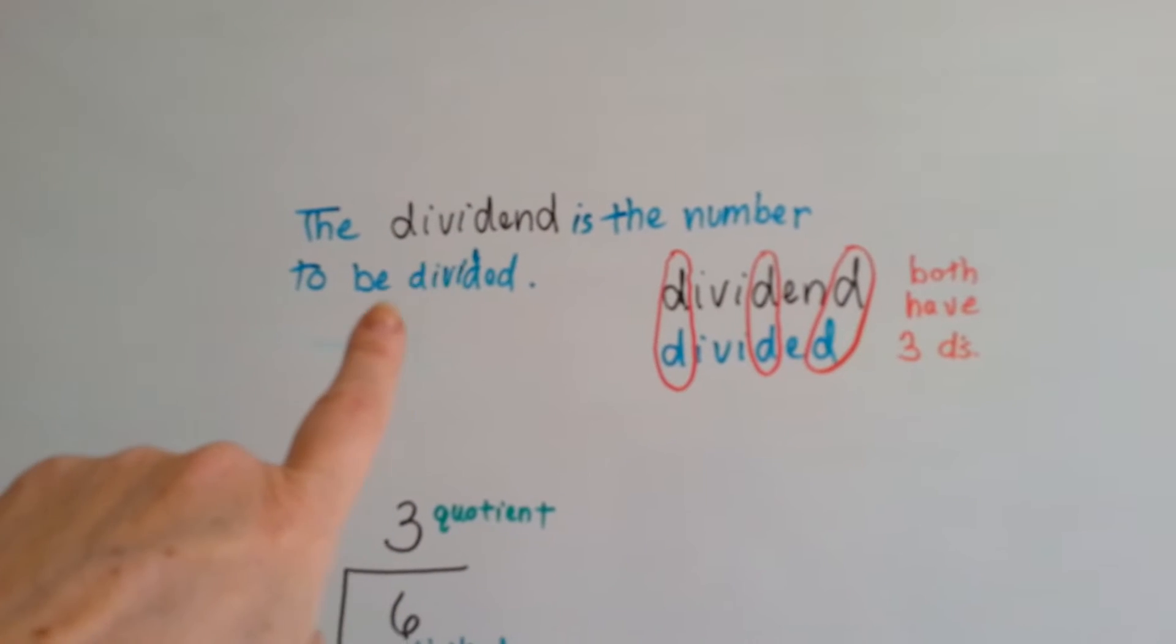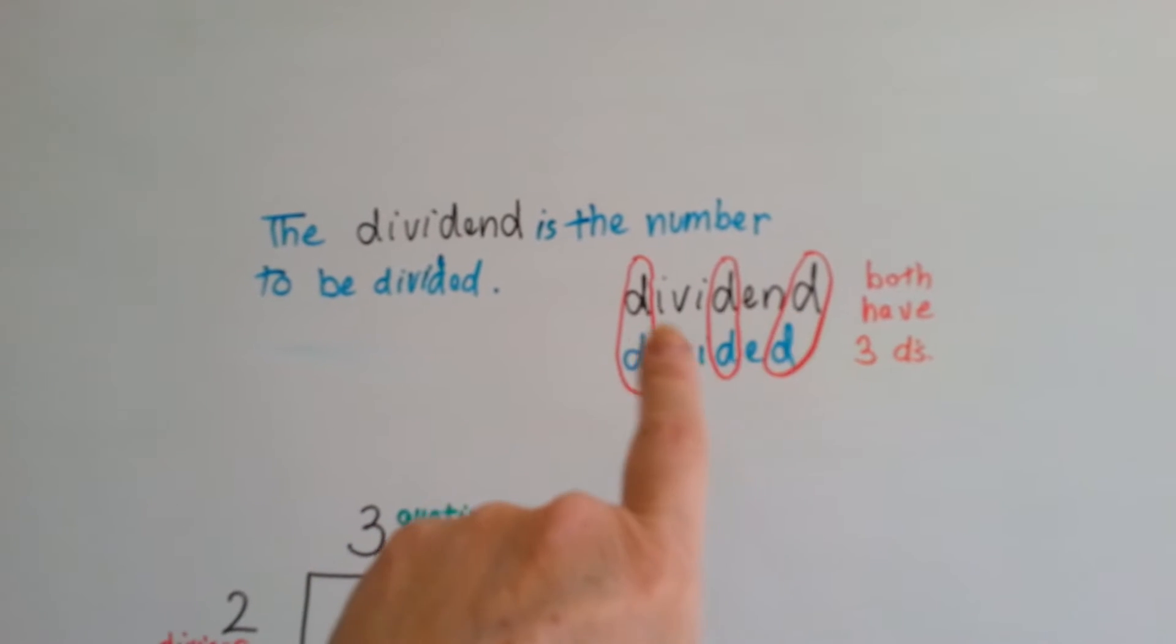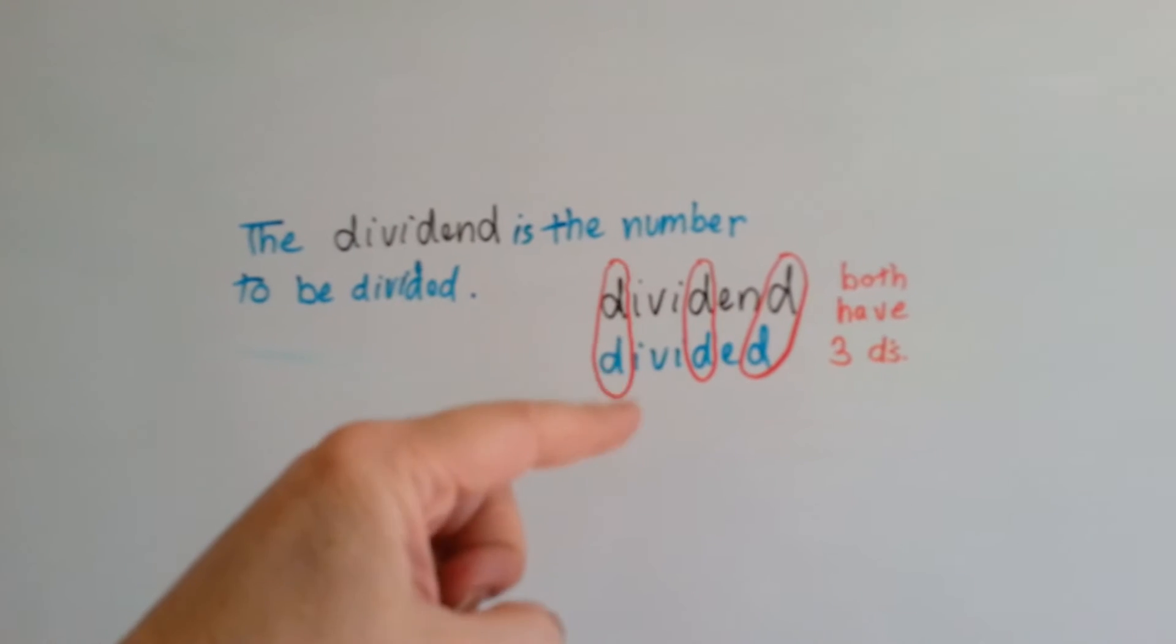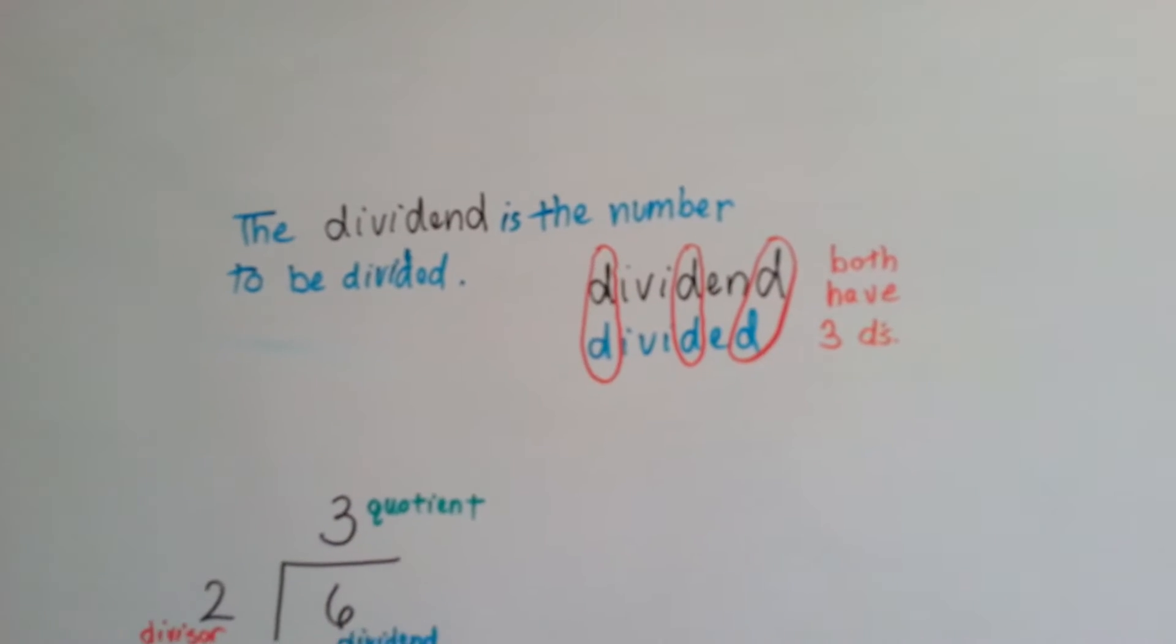The dividend is the number to be divided. And if you look at dividend, it has three D's, and so does divided. So, dividend is divided. It's the number to be divided. They both have three D's.